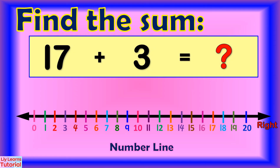Find the sum of 17 plus 3. We start from the bigger number, which is 17. Then we jump 3 numbers to the right: 1, 2, 3. We land on 20. So the sum of 17 plus 3 is 20.